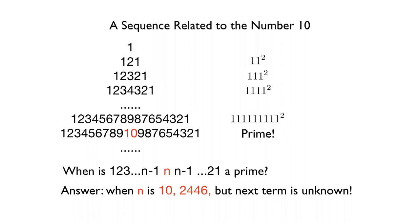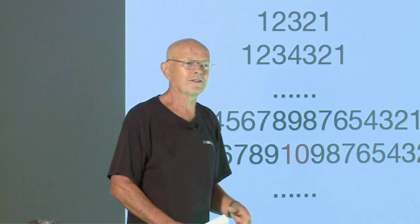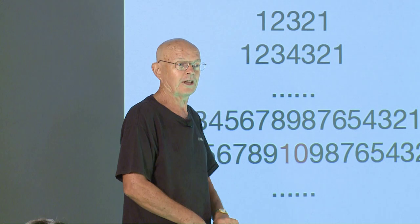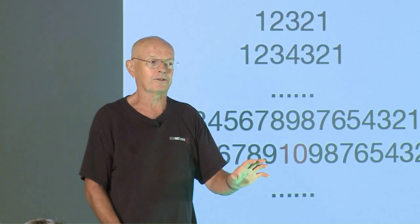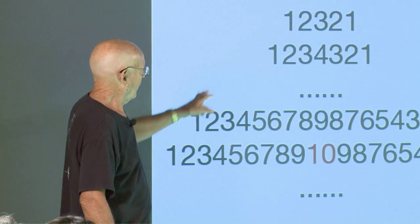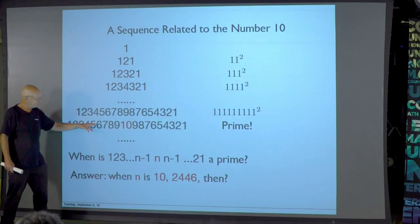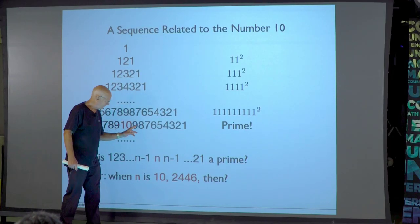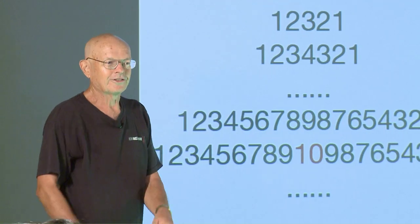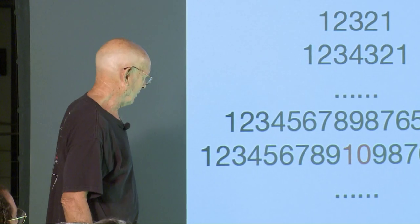Well, 1 is not a prime — although in California I'm told it's taught in schools that 1 is a prime, though in the rest of the world it's not regarded as a prime, which is correct. But anyway, when you get to 10, you get the number 1, 2, 3, 4, 5, 6, 7, 8, 9, 10, 9, 8, 7, 6, 5, 4, 3, 2, 1, and that is a prime. So it's a convenient 20-digit prime, if you ever need one.